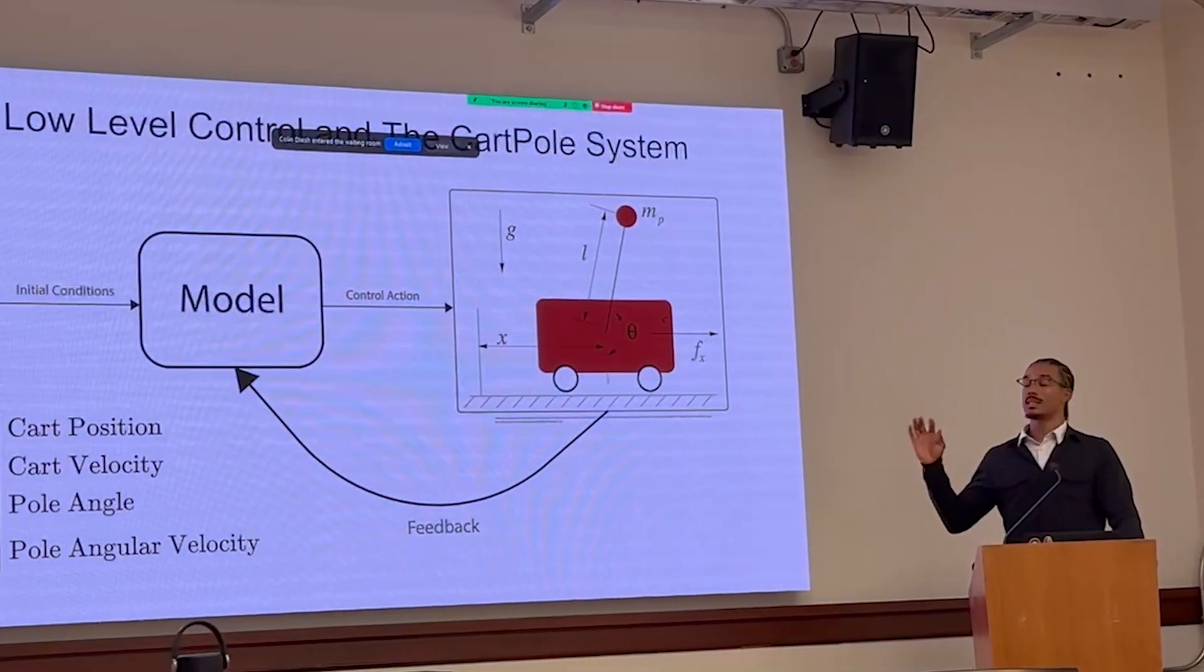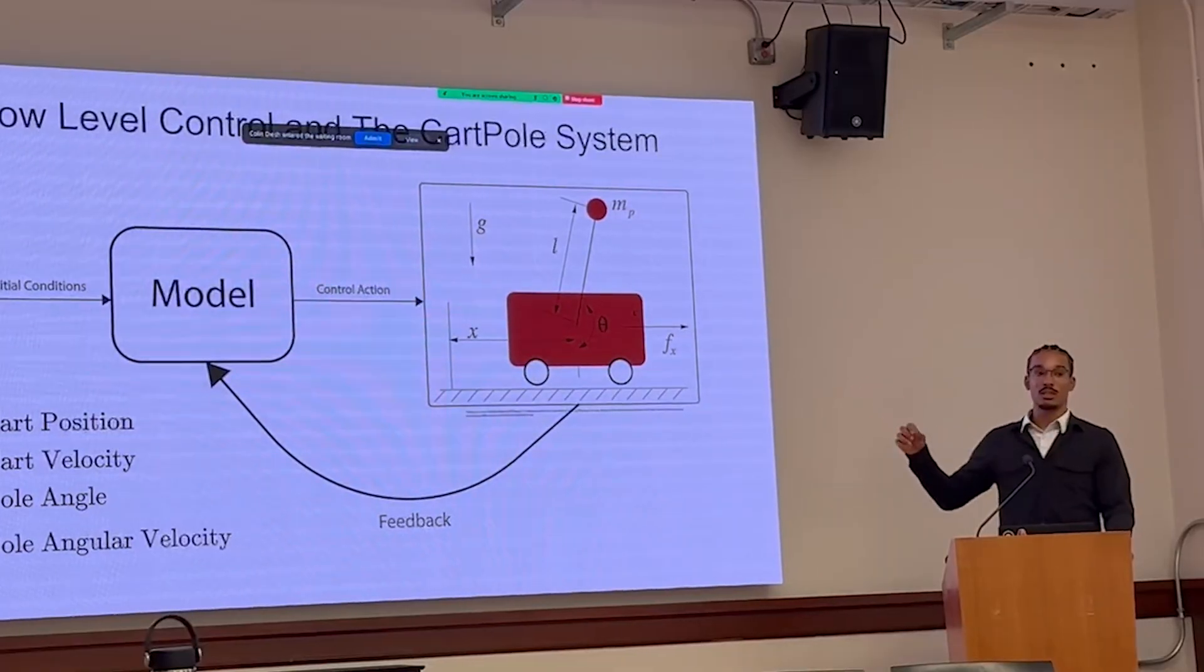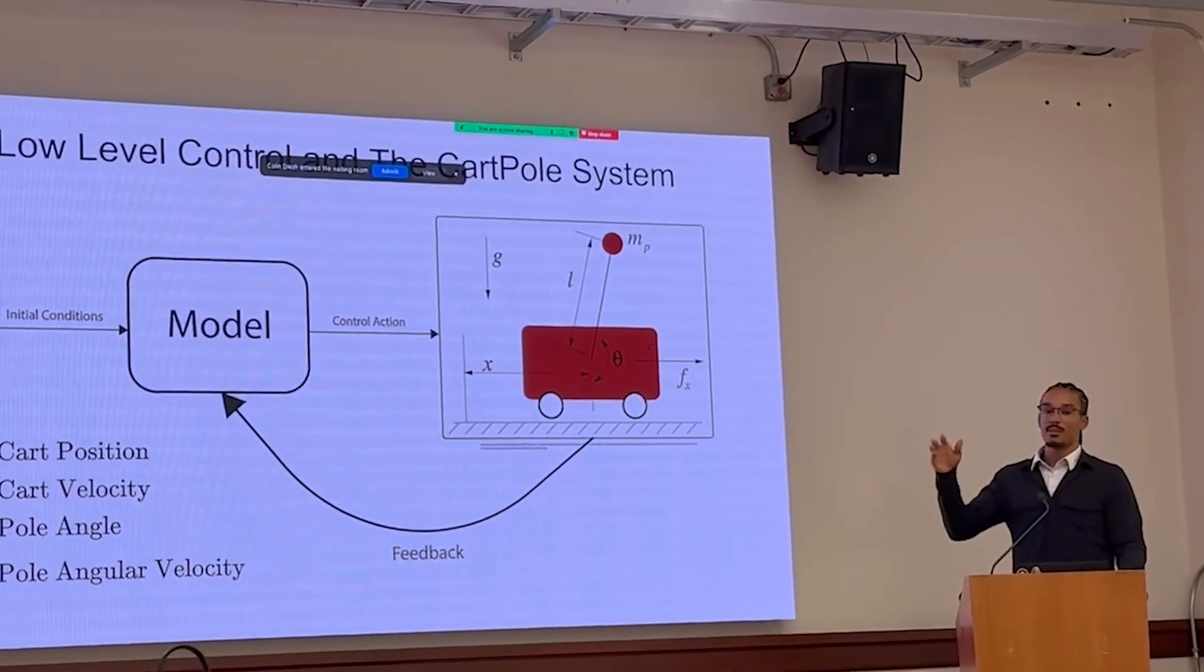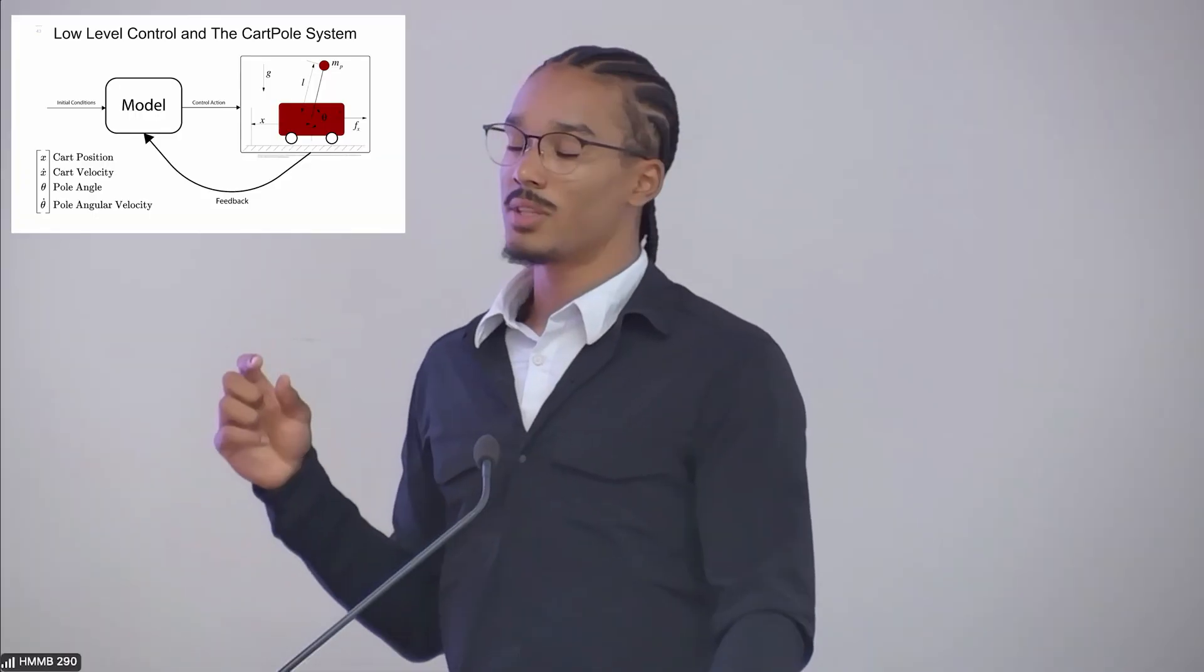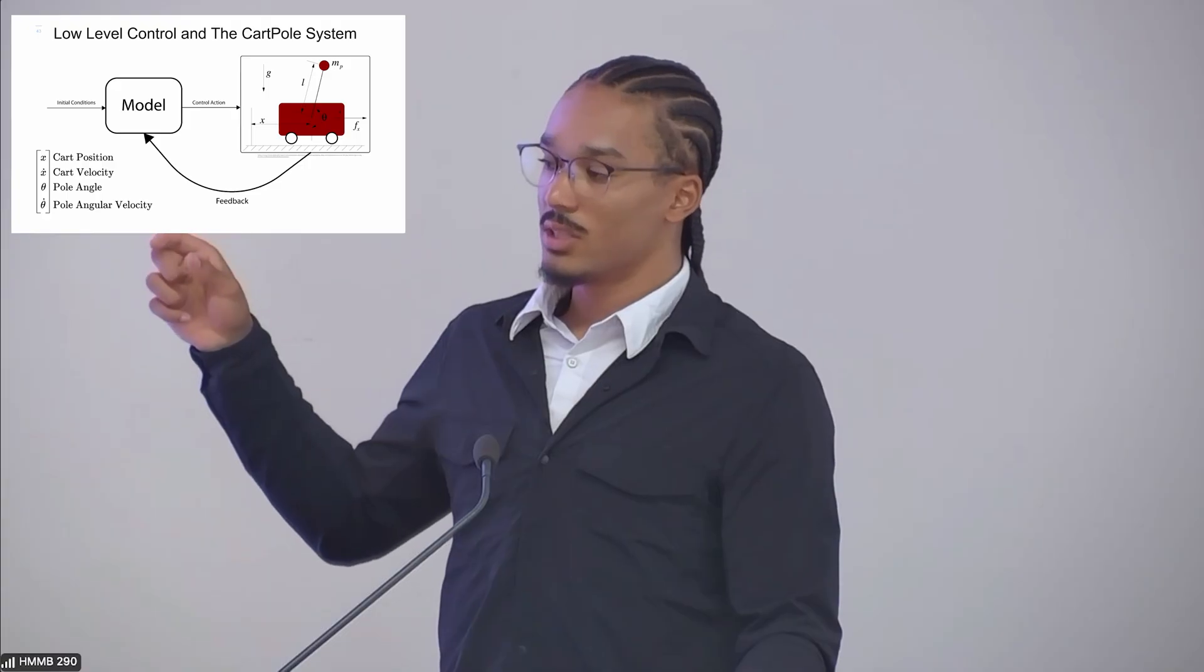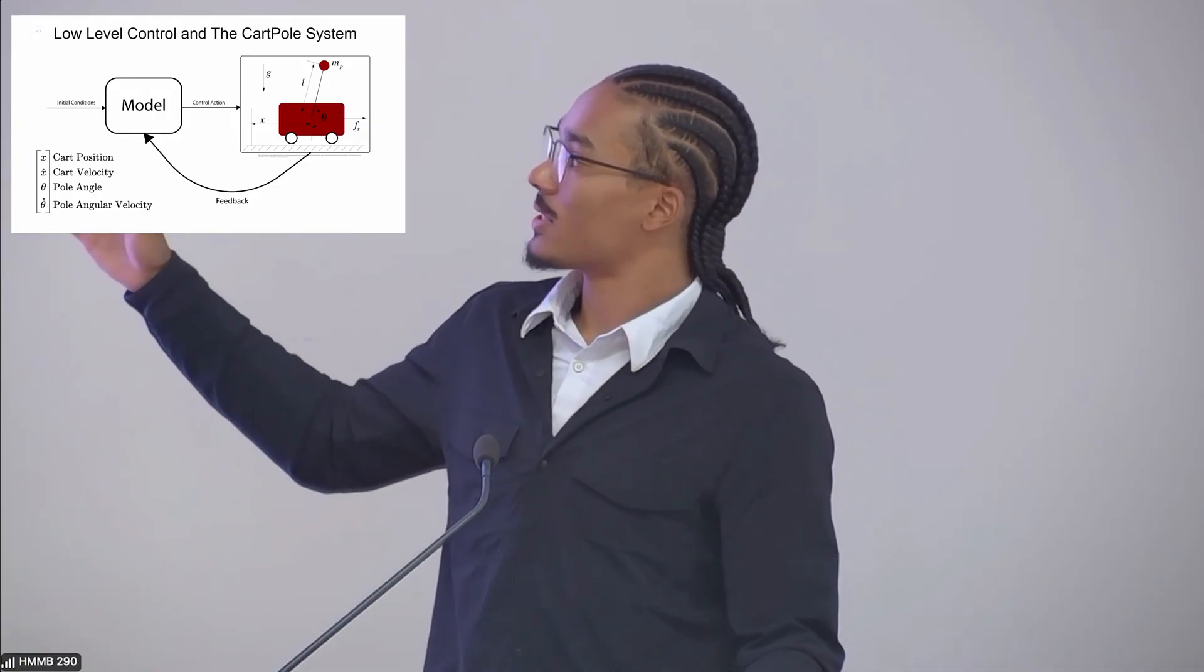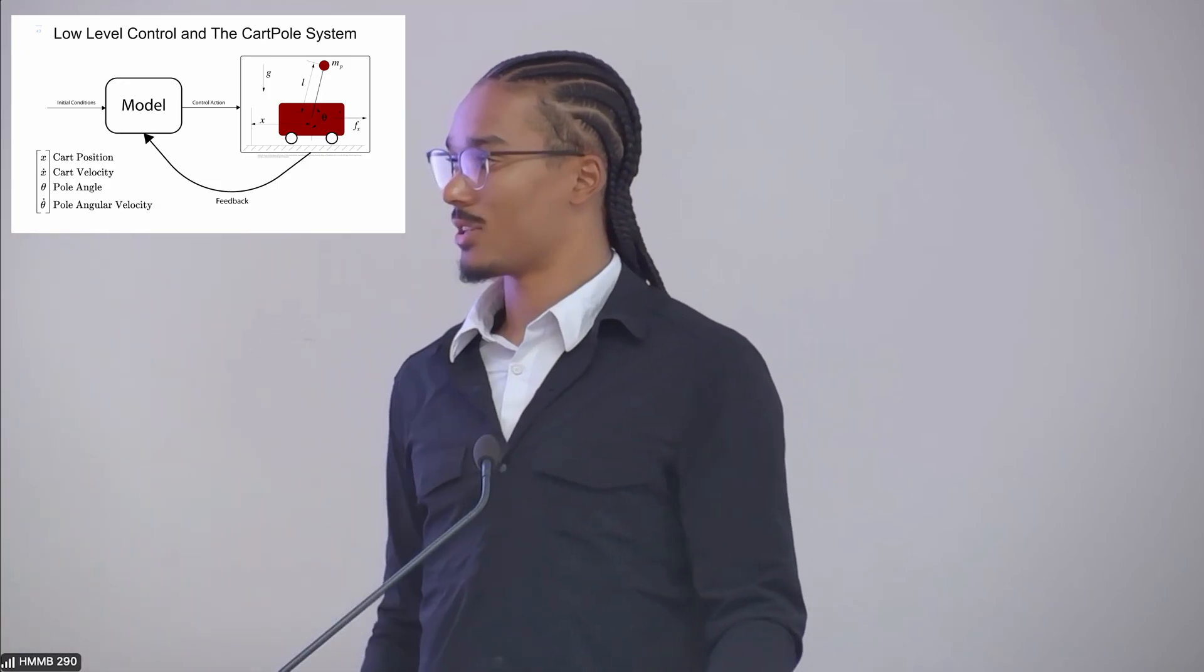And what is low-level control? This is a closed-loop example of low-level control. So you would have some sort of initial condition, you provide it to the model. The model provides a control action, and that influences the system. And then that feedback is given back to the model for it to then create the next control action. And something that is unique to transformers, especially as a model, is that previous control actions are able to impact the next control actions that are made.